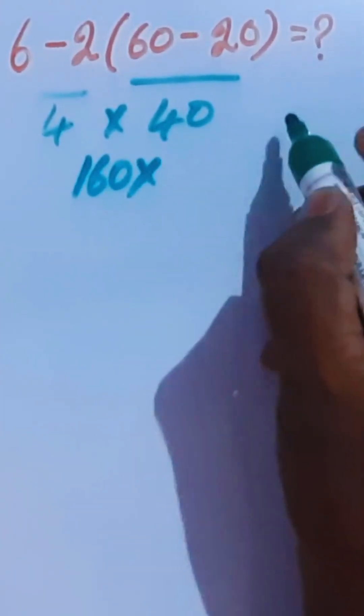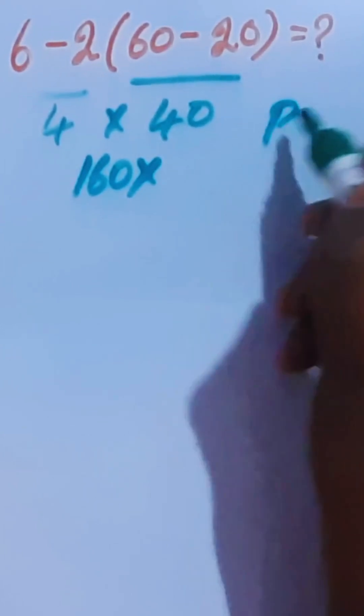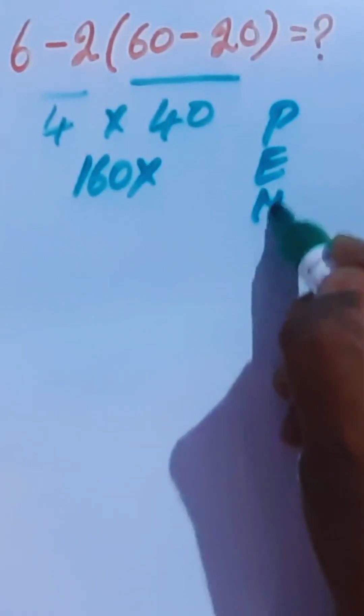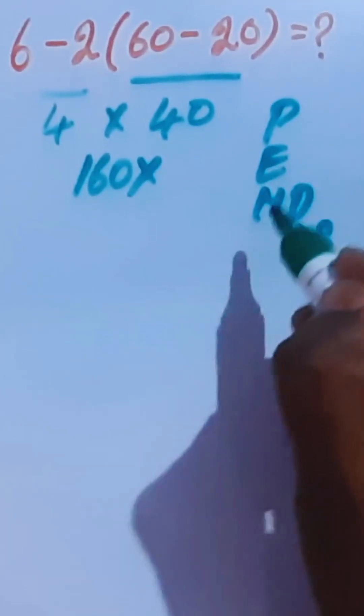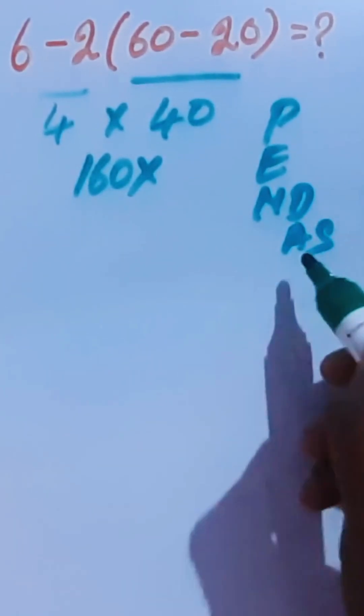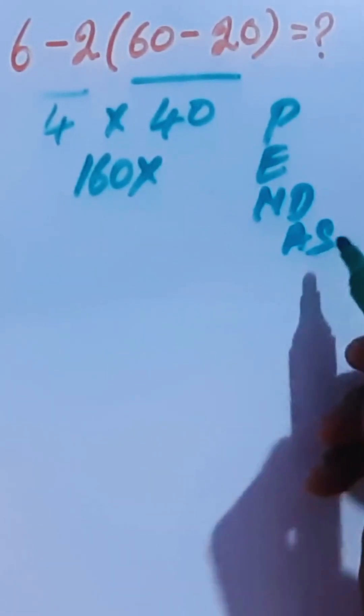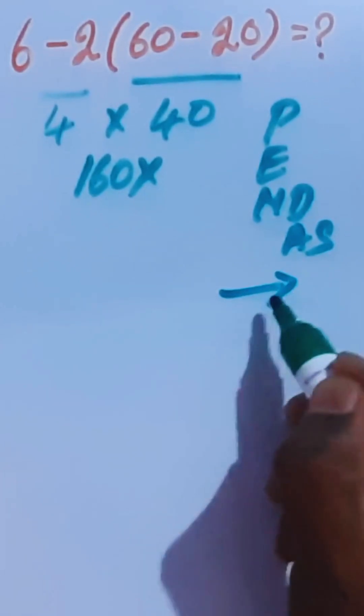This is wrong. As per PEMDAS order of operations, multiplication and divisions are equal priority, addition and subtractions are equal priority. For this, we have to follow left to right.